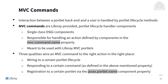Three qualities wire an MVC command to the right action in the right place. These are: wiring to a certain portlet lifecycle, responding to a certain command as defined in MVC.command.name, and registration to a certain portlet via the javax.portlet.name component property. Note that an MVC command can be tied to more than one command and more than one component property.